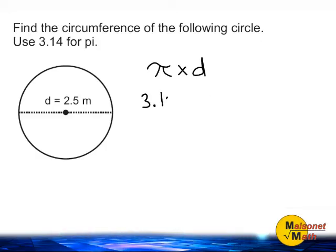So we are going to substitute pi with the value 3.14 and multiply that by 2.5. After we multiply these two values together, that will tell us the distance all the way around our circle.